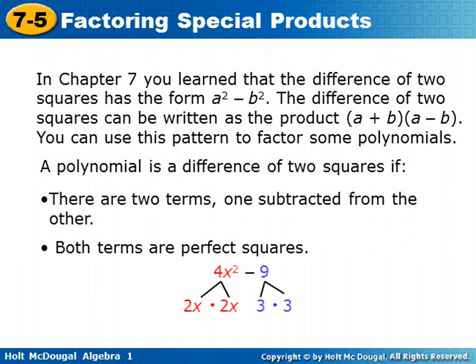So for instance, 4x squared minus 9: 4x squared is a perfect square — 2x times 2x, or 2x squared. And 9 is a perfect square — 3 times 3, or 3 squared. Subtraction is in between the two terms.